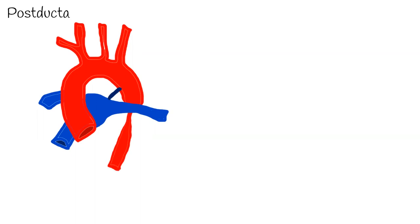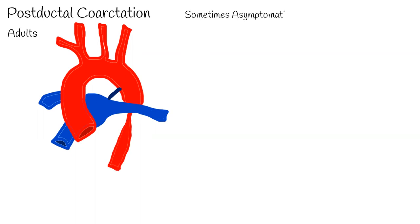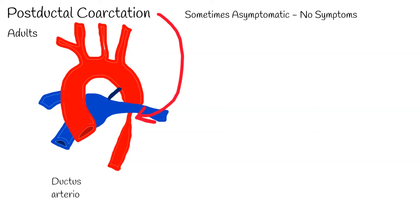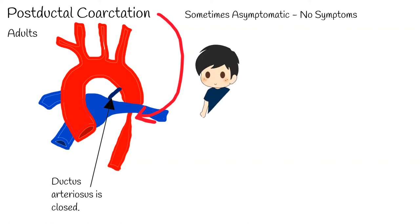Postductal coarctation usually occurs among adults and is sometimes asymptomatic. Aortic narrowing is presented after the ductus arteriosus. The ductus arteriosus has no function in this case, so it is usually closed.